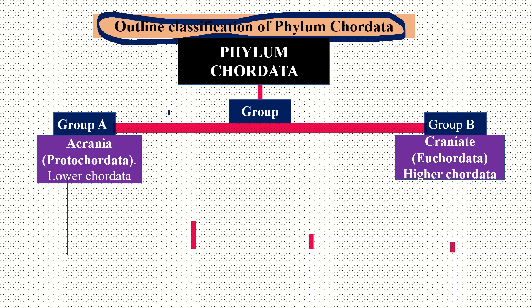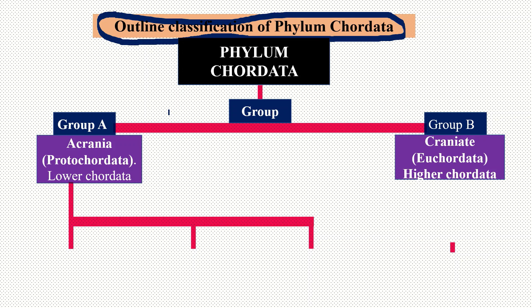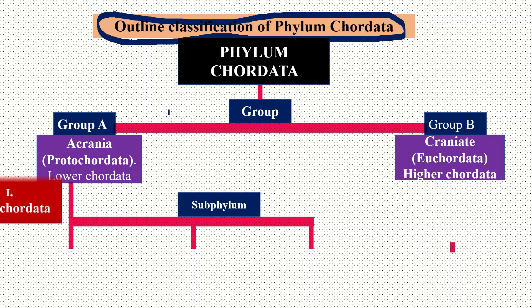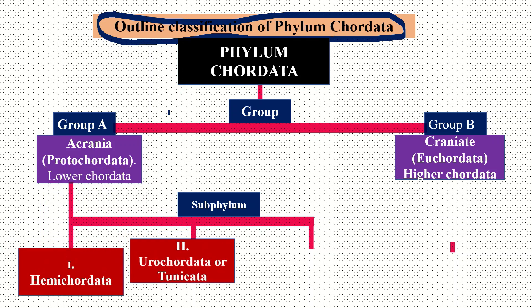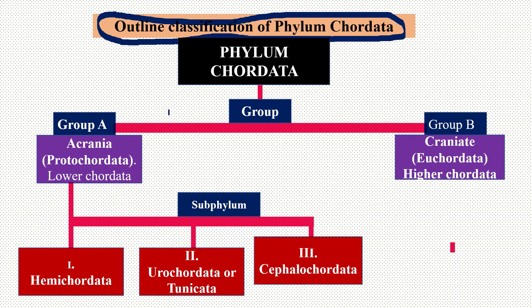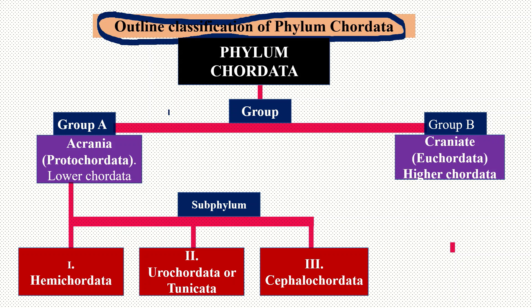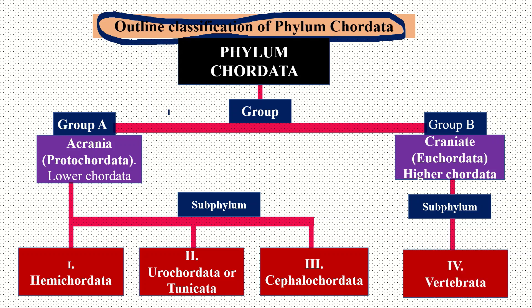Protochordata can be divided into three subphyla: Hemichordata, Urochordata, and Cephalochordata. While Craniata or Eochordata has only one subphylum, that is called Vertebrata.